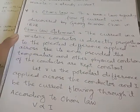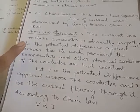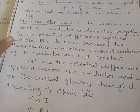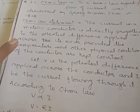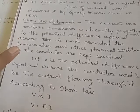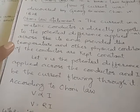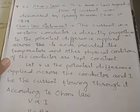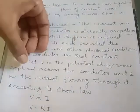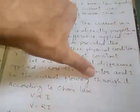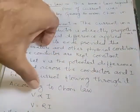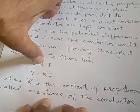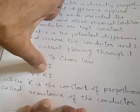Ohm's Law states that the current in a conductor is directly proportional to the potential difference applied across its ends, provided the temperature and other physical conditions of the conductor are kept constant. If V is the potential difference and I is the current, then V is proportional to I, or V = RI.